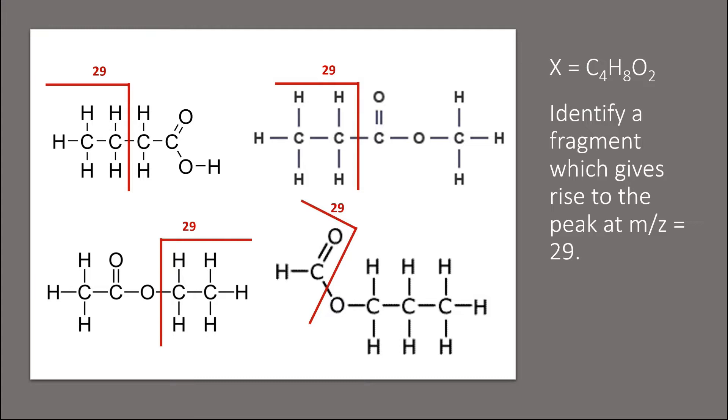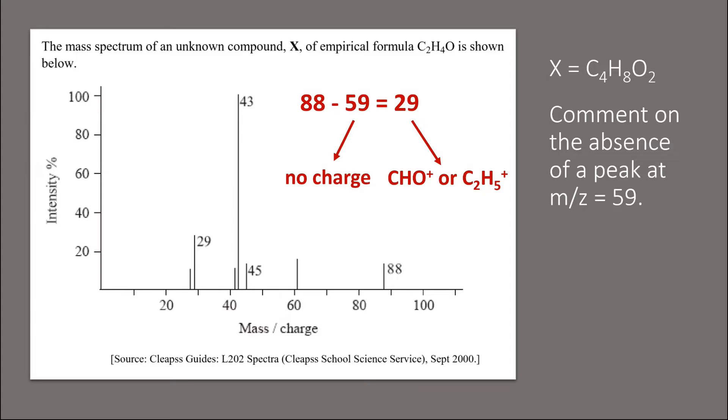Each of these isomers could potentially form fragment ions that have a mass of 29. The peak at mass to charge ratio of 29 may belong to CHO plus or C2H5 plus ion. Now there is no peak at 59. Well, 88 minus 59 is 29. This means that after the molecule loses the C2H5 plus or CHO plus ions, the other fragment produced has no charge and therefore cannot be detected by the mass spectrometer.